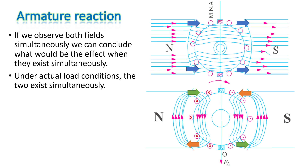At the top north corner, the armature magnetic field is in the same direction as the stator field, so they reinforce each other and the field becomes stronger. At the bottom corner of the north pole, the fields oppose each other, so the armature field tries to reduce the magnetic field there. Similarly, at the bottom corner of the south pole the fields are in the same direction and reinforce, while at the top corner of the south pole they oppose. So field strength increases at some pole tips and decreases at others.